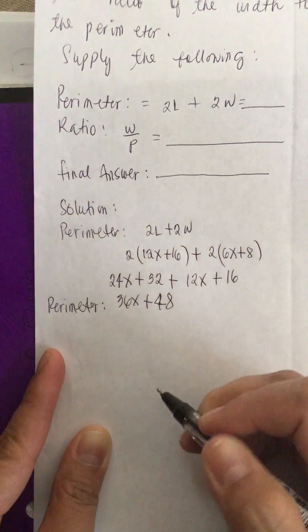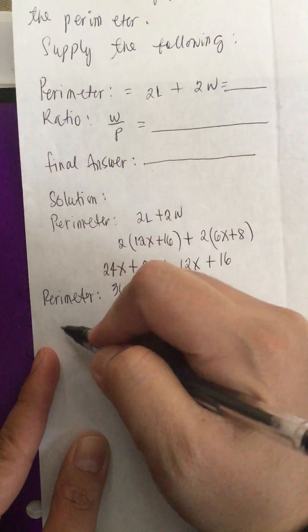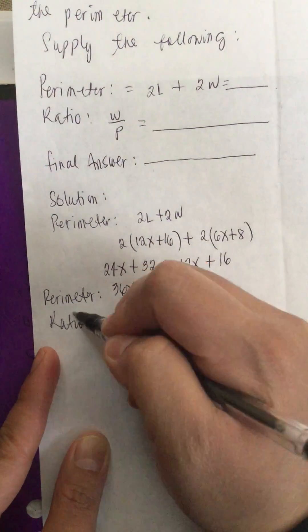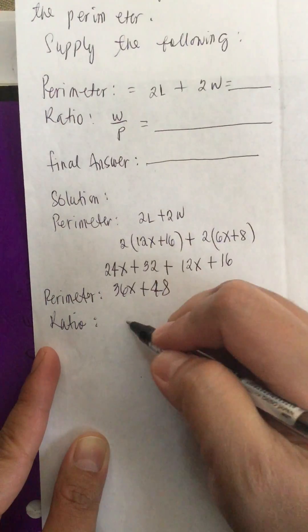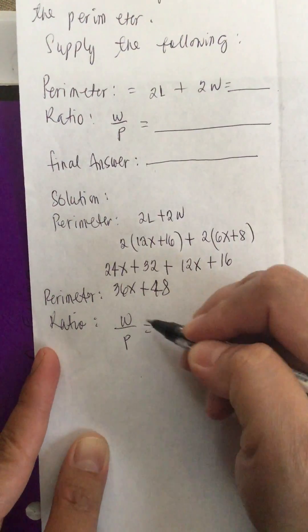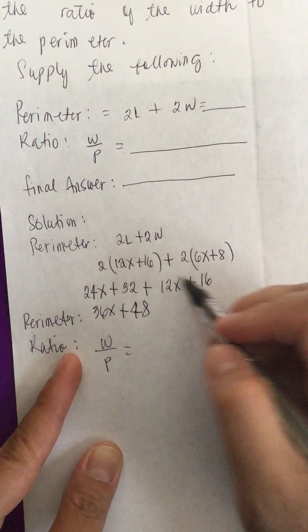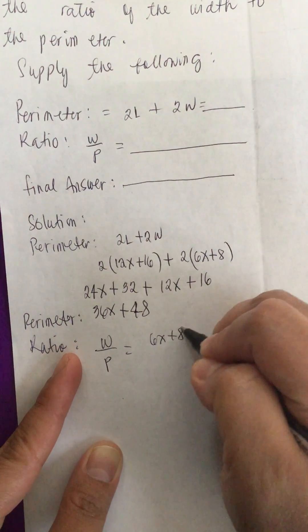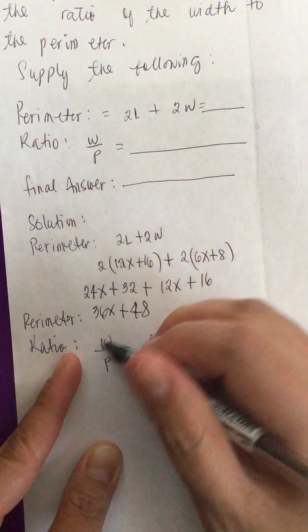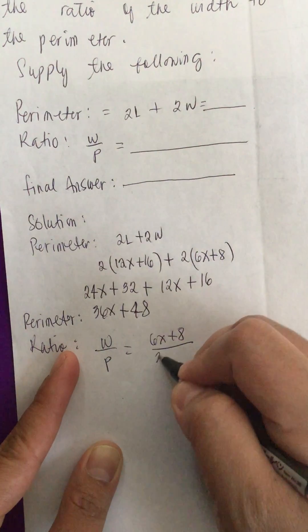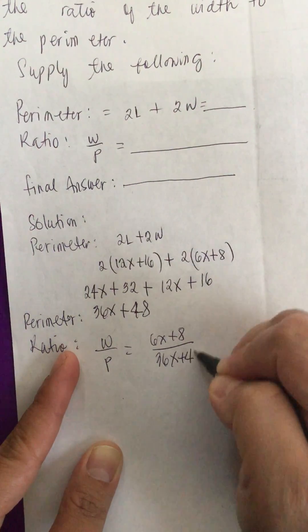Perimeter. Now let's do the ratio. The ratio is W over P. This equals W, which is 6x plus 8, over P, which is 36x plus 48.